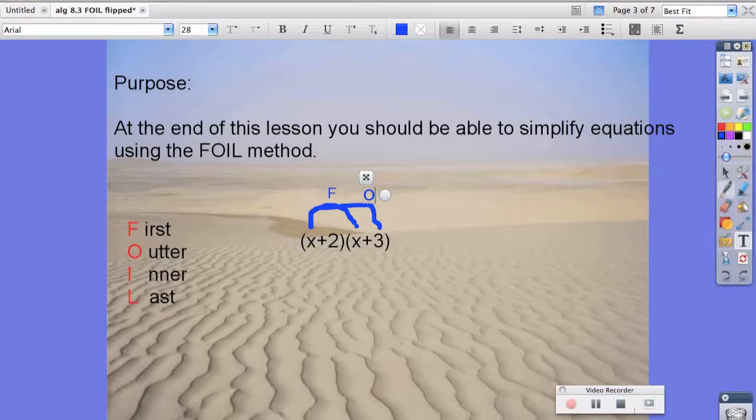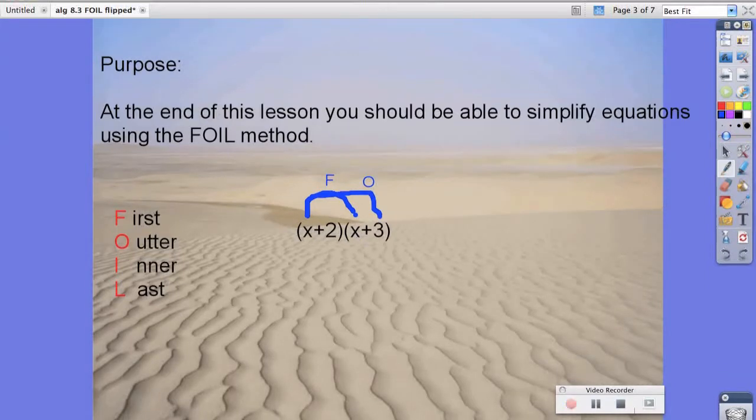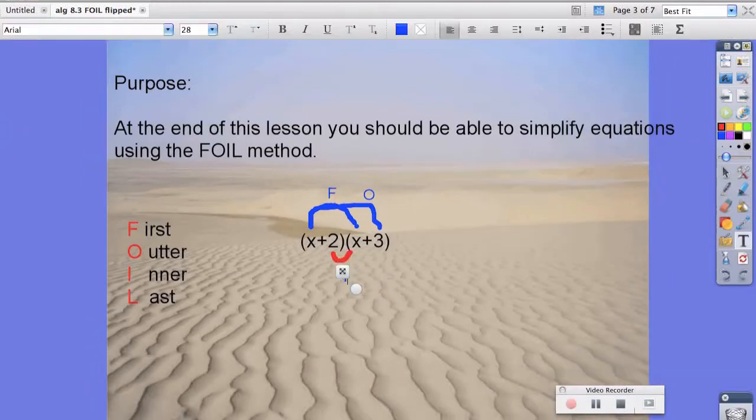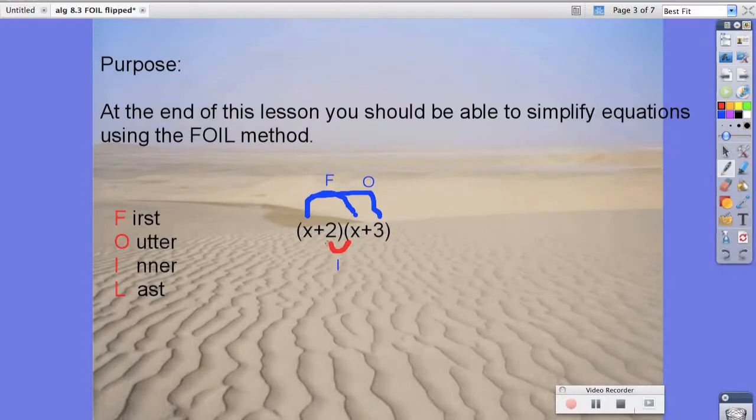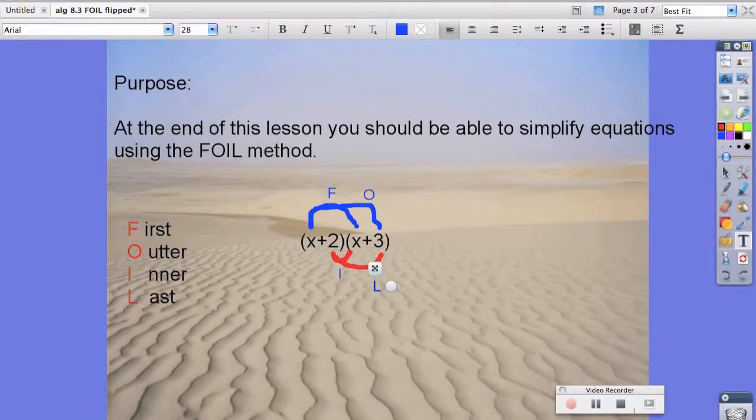Then we have our inner, which are our two inner terms, which are 2 and x are our inner. And then we have last. Last are our two last terms that we haven't connected yet. So that's last.